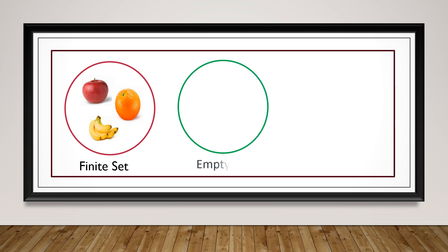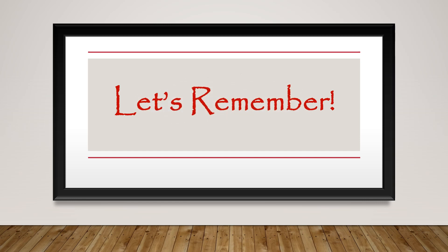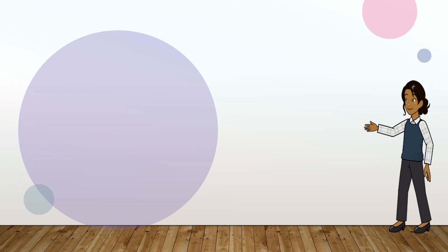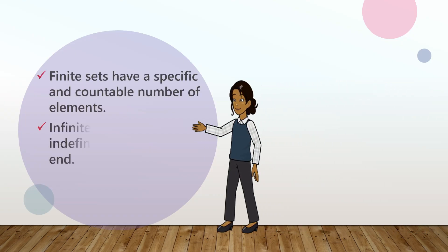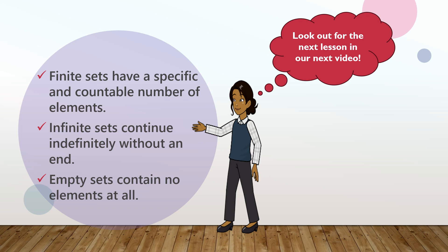Well done, students. You have learned about sets and how to distinguish between finite sets, infinite sets, and empty sets. Remember: sets help us organize and categorize things in mathematics. Keep exploring and discovering the fascinating world of sets. Until next time. Let's remember: finite sets have a specific and countable number of elements; infinite sets continue indefinitely without an end; empty sets contain no elements at all.